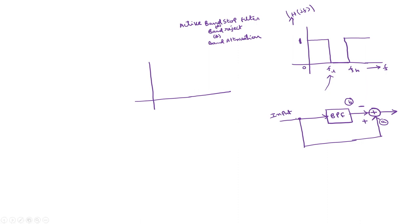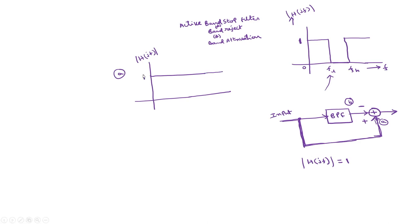A is nothing but the input. If I assume the input characteristics and consider the frequency response, output equals input means the transfer function H(jf) equals 1, considering a unity feedback path. Whatever the input will pass through this feedback path and reach the adder input with unity gain. So this A response will be a flat response of unity.